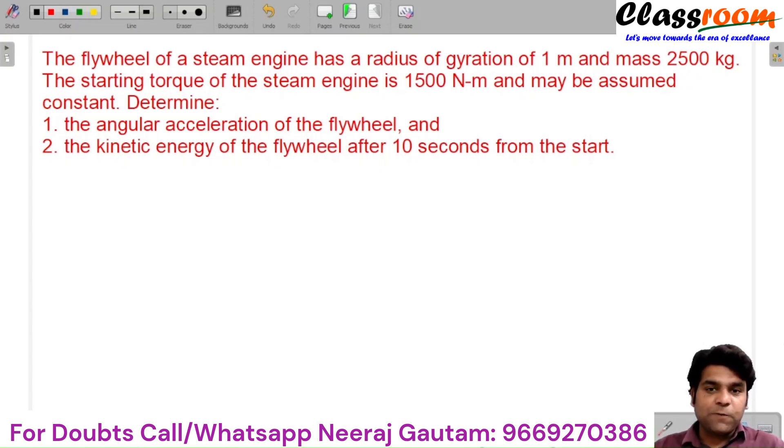Now consider this next problem on the flywheel. A flywheel of a steam engine has a radius of gyration of 1 meter and mass of 2500 kg.